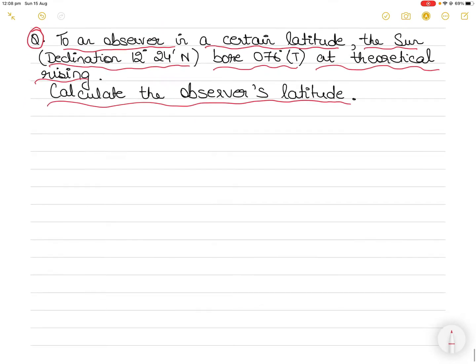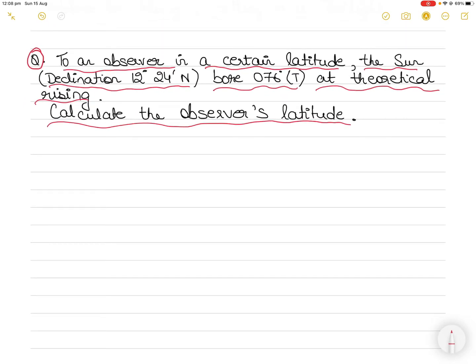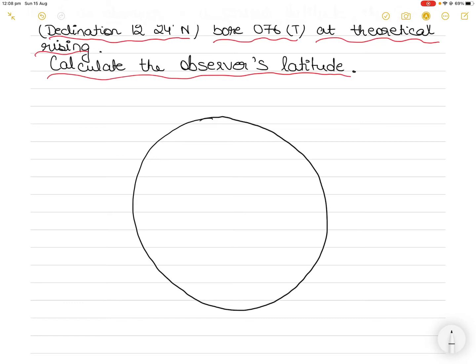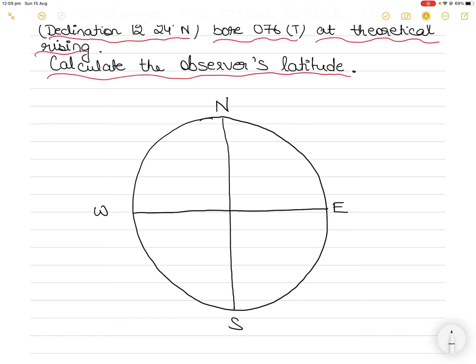Before we start solving the math, let's understand the rational horizon diagram so it's very clear. You draw a circle and mark north, south, west, and east — these are directions, not poles. The celestial sphere is of unlimited radius, so we cannot calculate its radius. Remember, this is not the Earth's sphere.